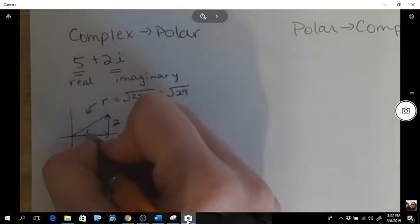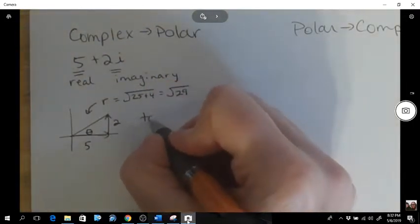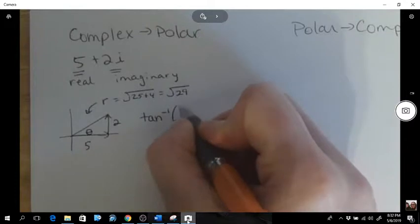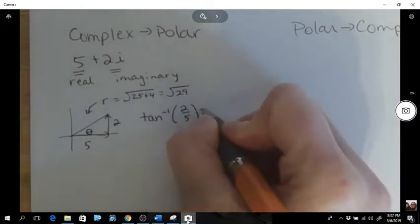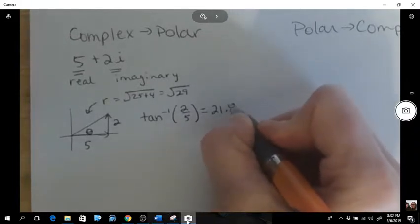And then I would also like to calculate that angle. So I will go tan inverse of 2 over 5. So that angle comes out to be 21.8 degrees.